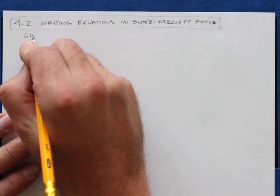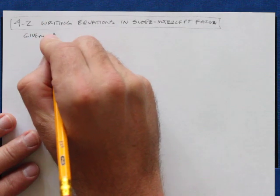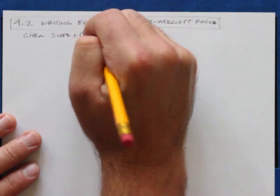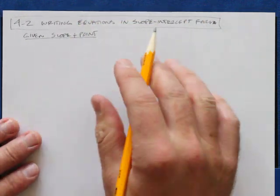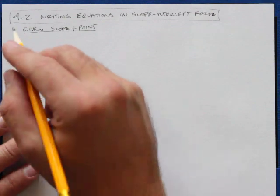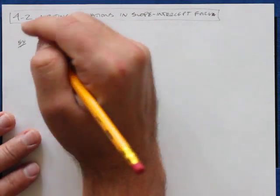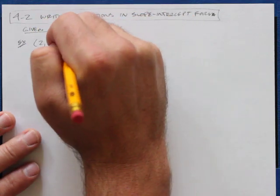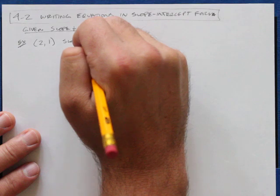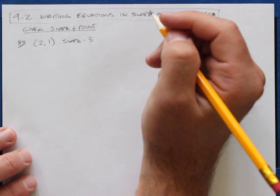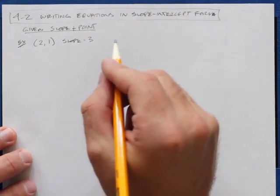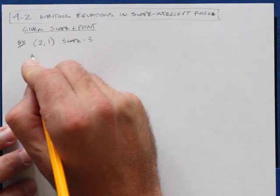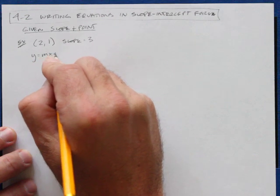We're going to be given the slope and a point. Here's your example: I have a point, (2, 1), and I know the slope — the slope is 3. And I want to write my equation in slope-intercept form. Slope-intercept form, remember, is y equals mx plus b.